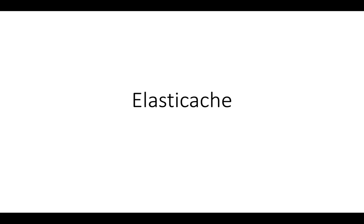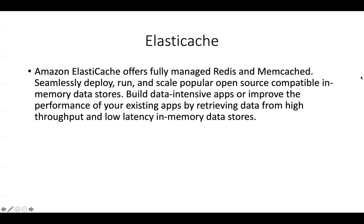Understanding the difference between these two will be critical for answering Solutions Architect Associate exam questions. Amazon ElastiCache offers fully managed Redis and Memcached, seamlessly allowing you to deploy, run, and scale popular open-source compatible in-memory data stores. You can build data-intensive applications or improve the performance of existing applications by retrieving data from high-throughput, low-latency in-memory data stores. It's a cluster you set up for Redis or Memcached.